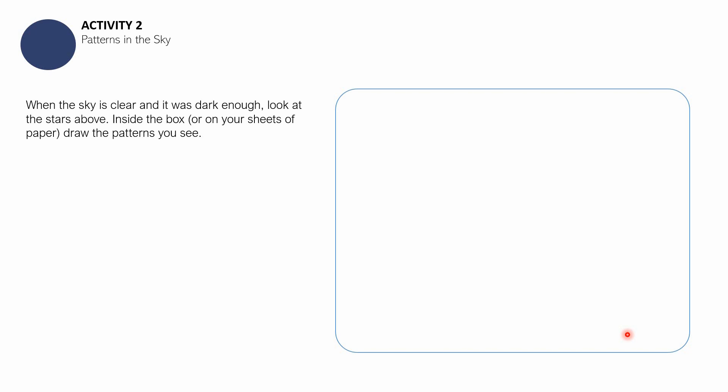The last part of this session is activity number two, patterns in the sky. What you need to do is group stars together in a recognizable pattern. This is a very easy activity, but you're supposed to do it at night. When the sky is clear and it was dark enough, look at the stars above the sky. Inside the box or on your sheets of paper or science notebooks, draw the patterns that you see. You have to also name the constellations you saw by searching for their names over the internet. You can also reverse the process, search for a constellation on the internet first, then find it in the night sky.